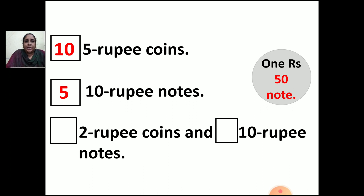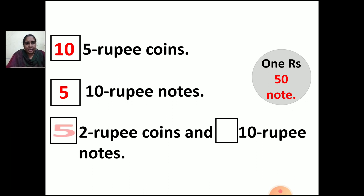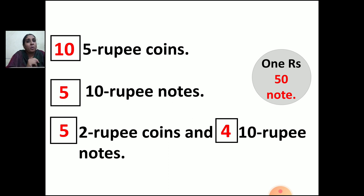Next: dash 2 rupee coins and dash 10 rupee notes. Here they have given both together — you should have 10 rupee notes also and 2 rupee coins also. How many 2 rupee coins and how many 10 rupee notes will you take to make 150 rupees? If you take 5 two-rupee coins, then you will have 10 rupees. And how many 10 rupee notes? 4. So 5 two-rupee coins make 10 rupees and 4 ten-rupee notes make 40 rupees. 40 plus 10 is 50. So 5 two-rupee coins and 4 ten-rupee notes will make 150 rupees.